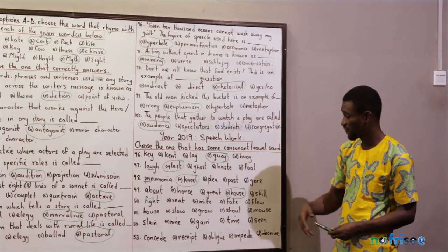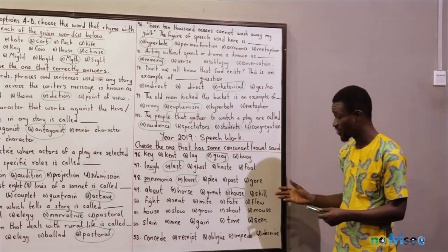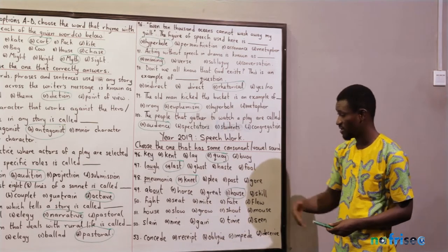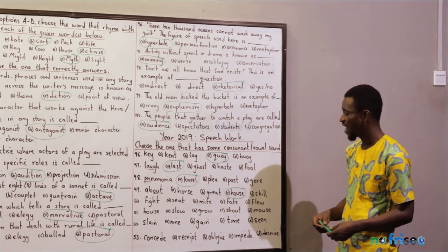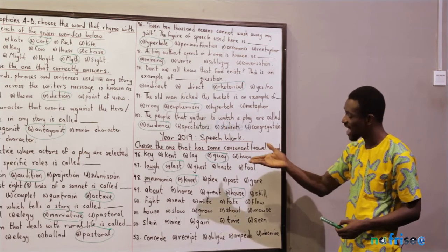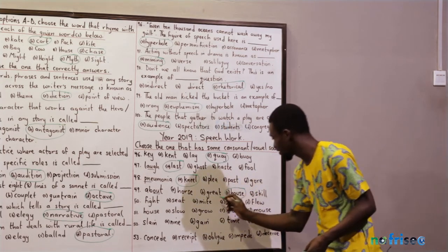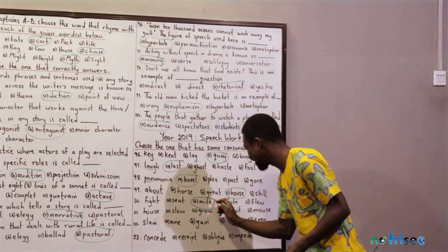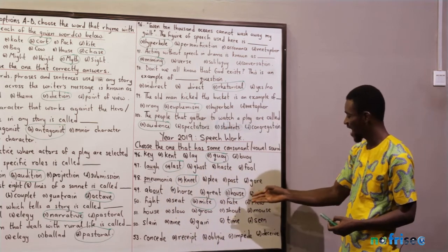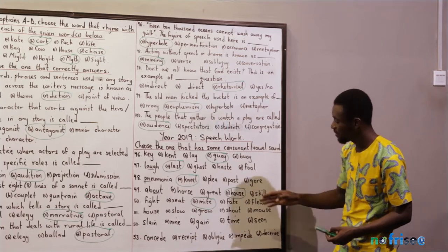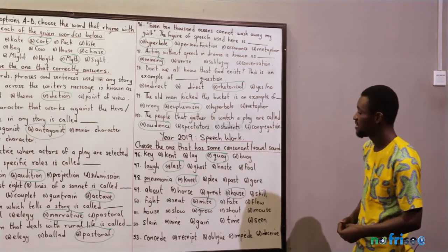Questions 50 to 53: check the same rhyme — the option that has the same rhyme with the word itself. Question 50 — 'fight.' Which option has the same rhyme as 'fight'? That's option B — 'might.' Option A, 'seat,' is /iːt/. Option C, 'fate,' is /eɪt/. Option D, 'flew,' is /uː/. Only 'might' rhymes with 'fight.'